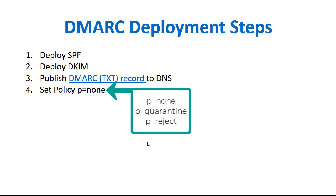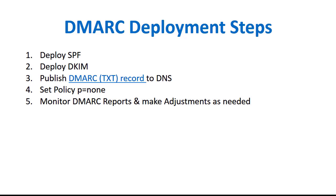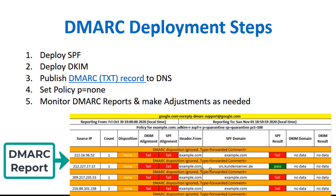When deploying DMARC at the beginning, standard practice is to start out with a policy of P equals none so that messages aren't rejected or quarantined based on the results. This allows you to make final adjustments to ensure that all legitimate mail coming from your domain is properly aligned with SPF and DKIM. During this time, you can monitor incoming DMARC reports sent from other mail servers and gateways to review how your domain is being used.